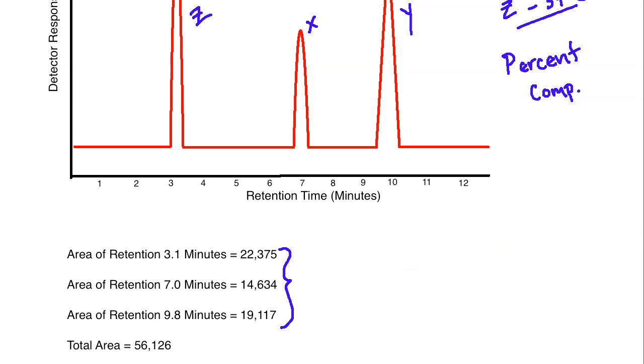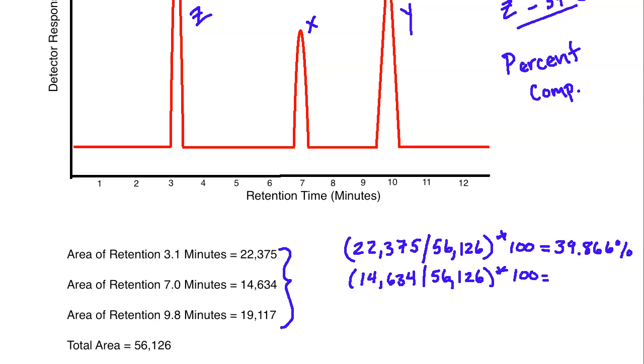For the retention peak at 3.1 minutes, we would need to take 22,375, and we divide that by 56,126. Multiply that by 100, and if you do that, you should end up with 39.866 percent. Now based on this, you should be able to figure out the other two as you move along here.